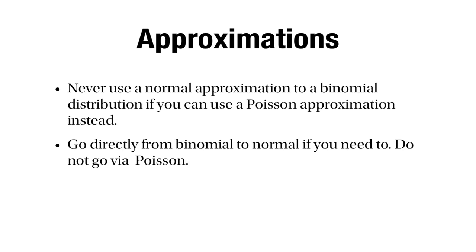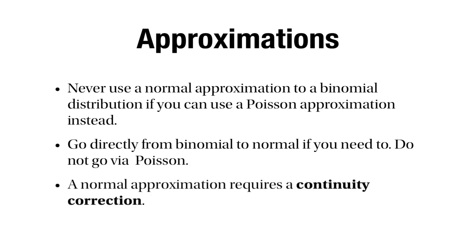It's very important to remember this. Sometimes you'll find the Poisson approximation doesn't work because you've got a very high value of lambda, and you might be tempted to then apply a normal approximation to that Poisson distribution — but that's wrong. You must not go binomial to Poisson to normal; you have to go directly from binomial to normal. Finally, remember that whenever you make a normal approximation to either the binomial or the Poisson distribution, you have to make a continuity correction — you need this whenever you're approximating a discrete random variable with a continuous one.